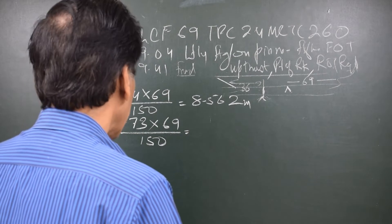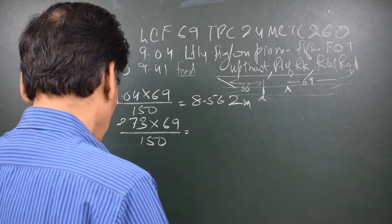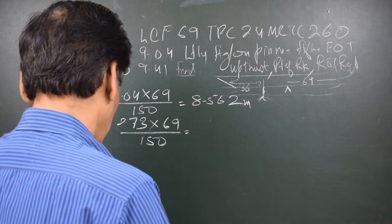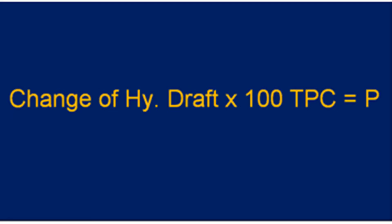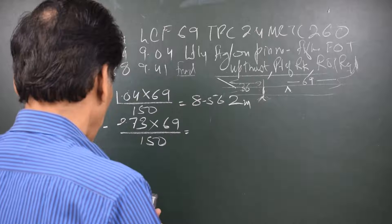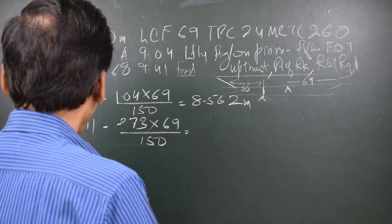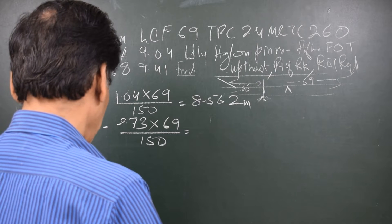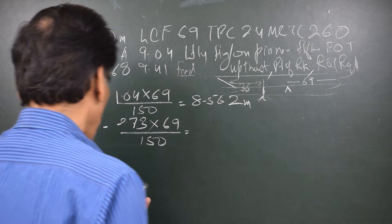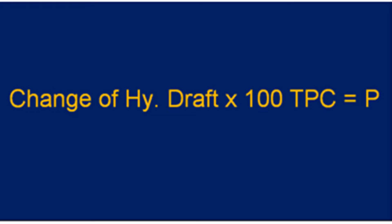Let us find out the final hydrostatic draft: 2.73 into 69 divided by 150 equals 1.2558, minus 9.41 gives me 8.154 meters.